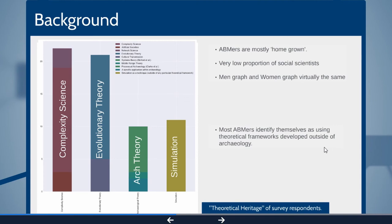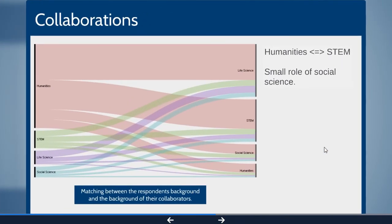Now we know who they are—who do they work with? This is the background of the people we surveyed and this is who they worked with. You can see humanities basically works mostly with life sciences and STEM subjects and not much with social science again, and not much with other people coming from humanities, which is again surprising because social science has much better developed field of agent-based modeling.